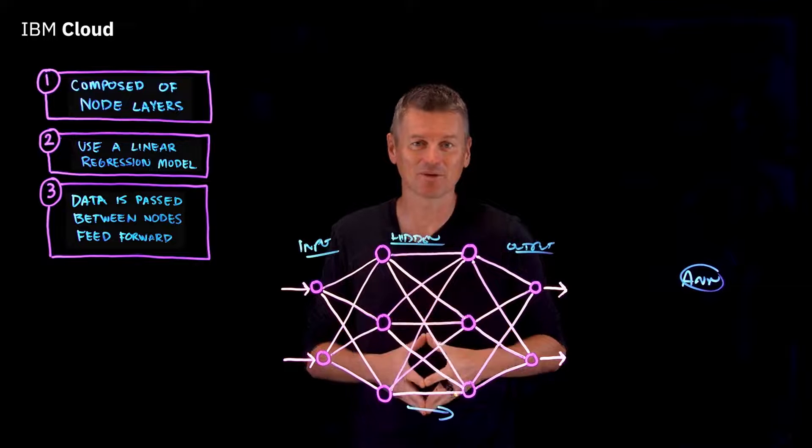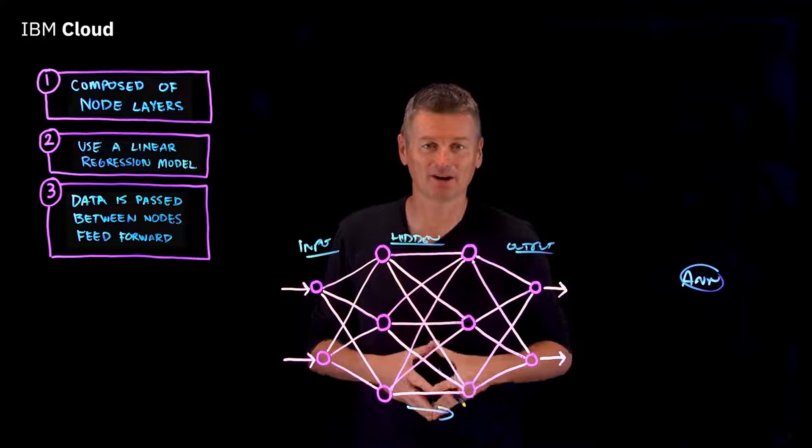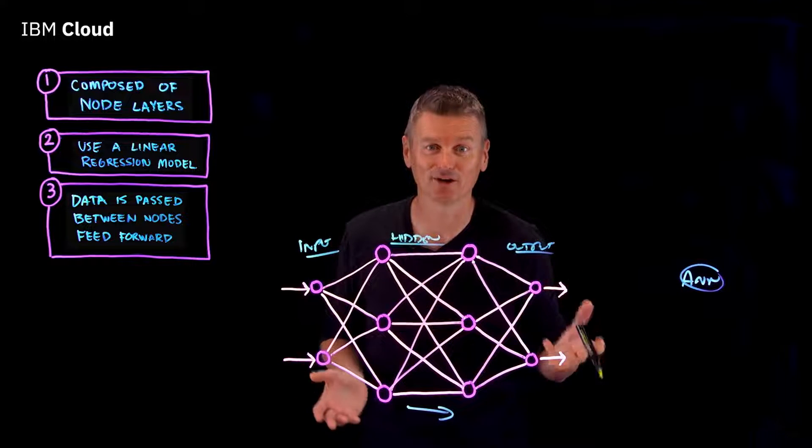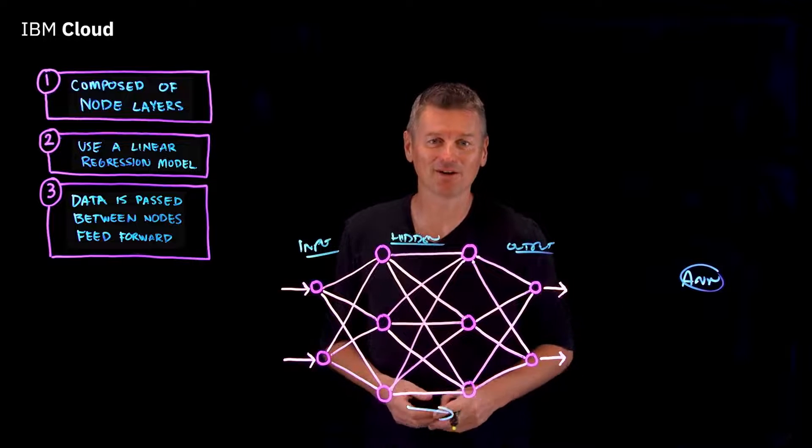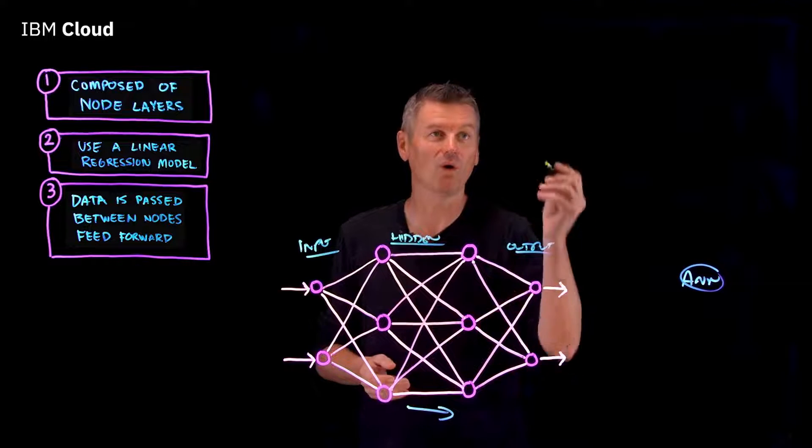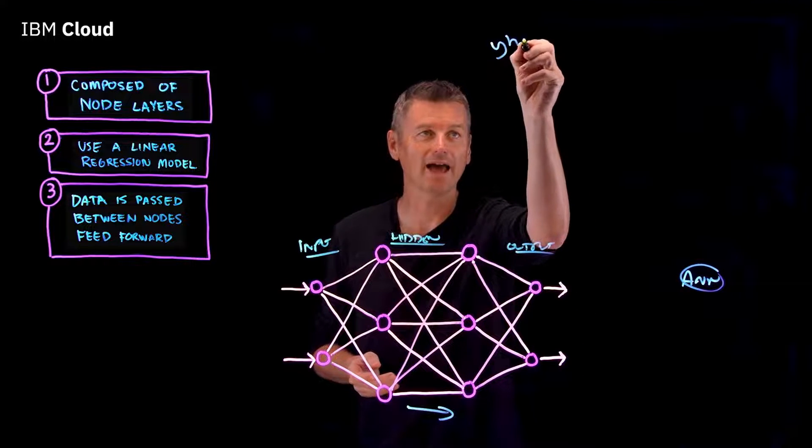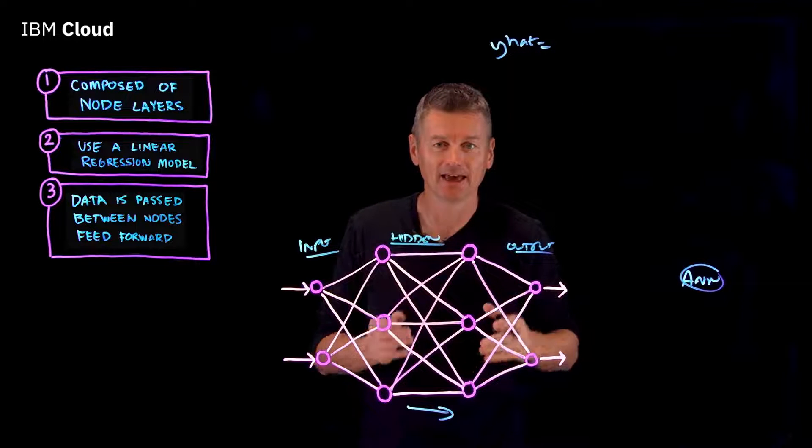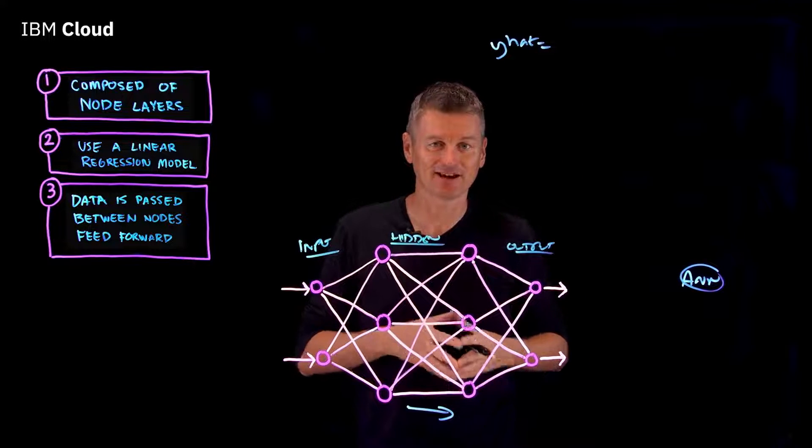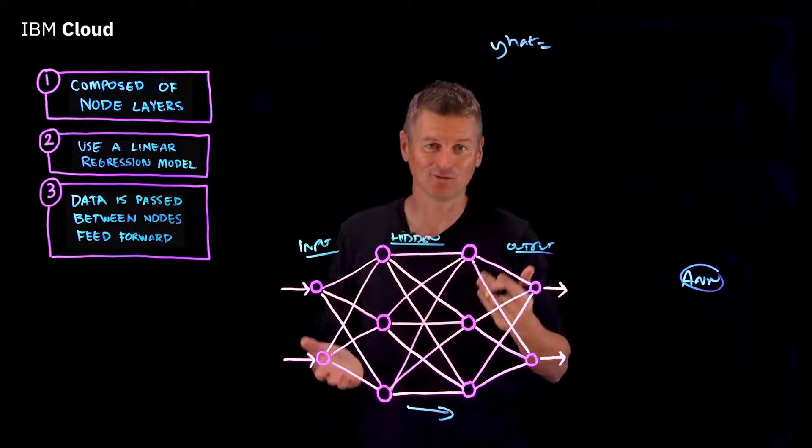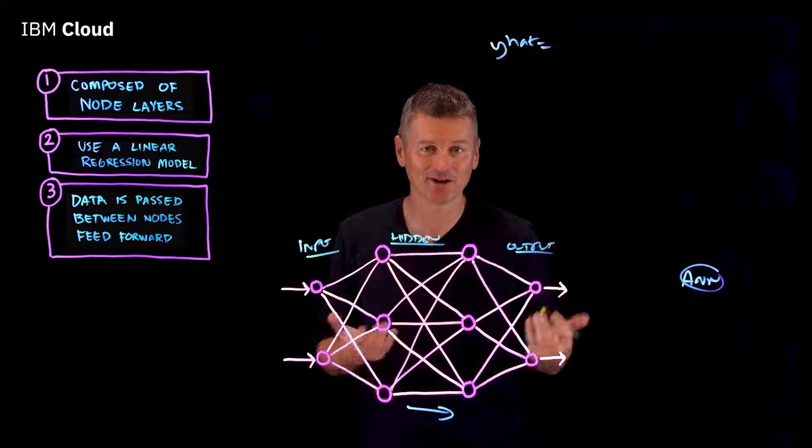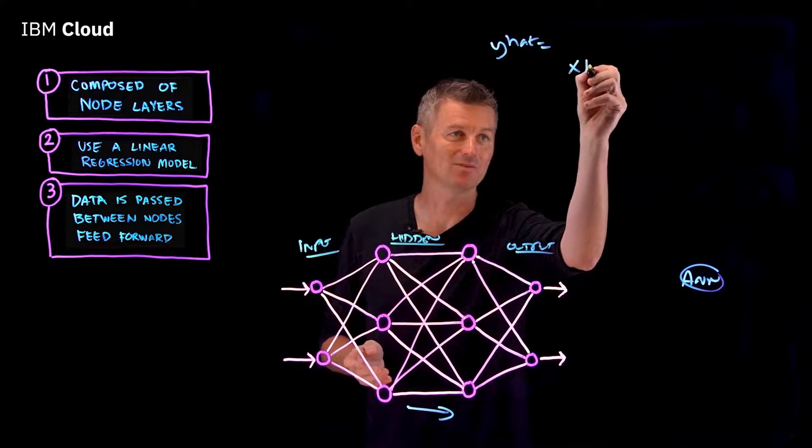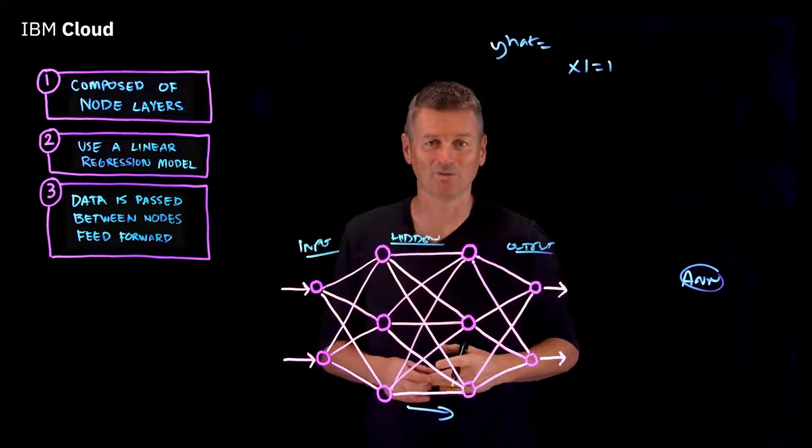to illustrate this, let's consider what a single node in our neural network might look like to decide: should we go surfing? The decision to go or not is our predicted outcome, known as our y-hat. Let's assume there are three factors influencing our decision. Are the waves good? One for yes or zero for no. The waves are pumping, so x1 equals one.